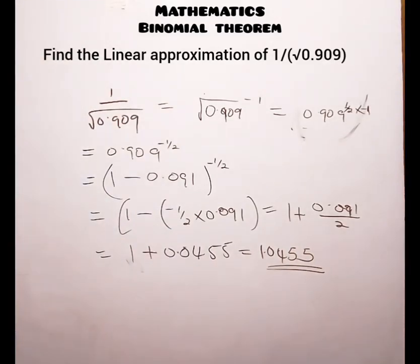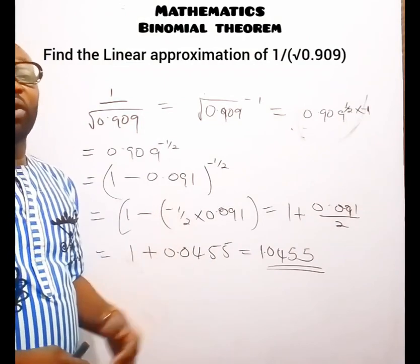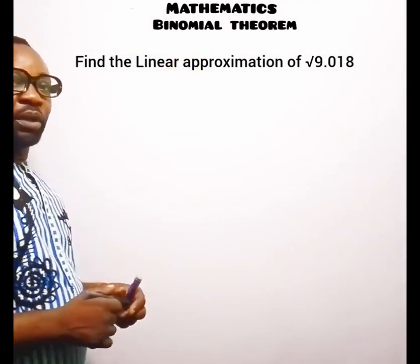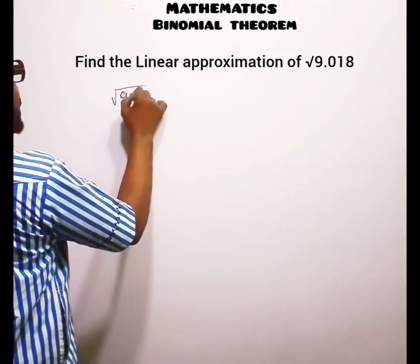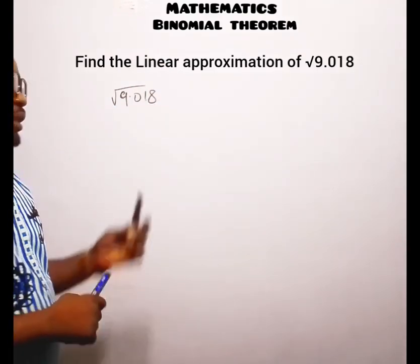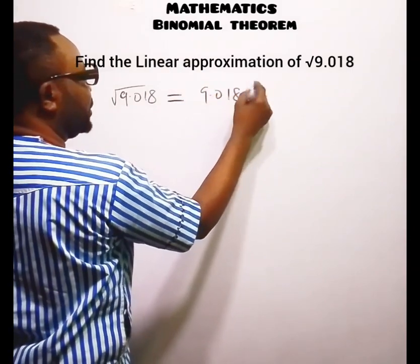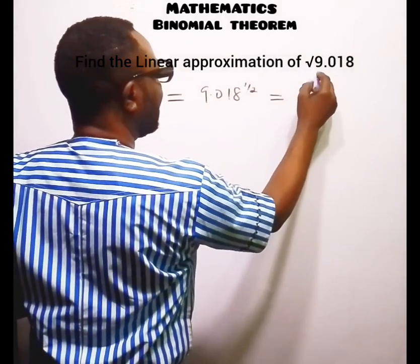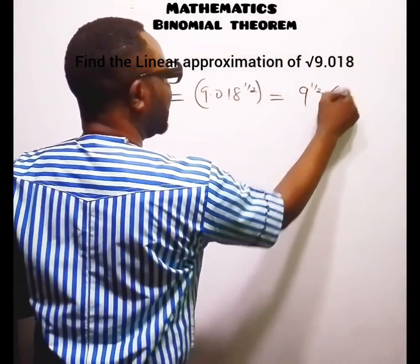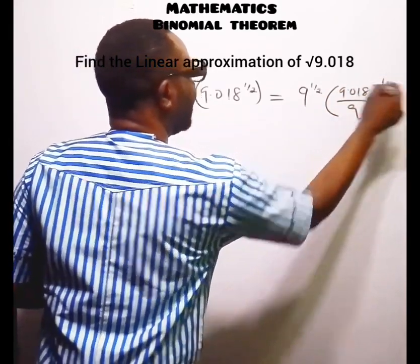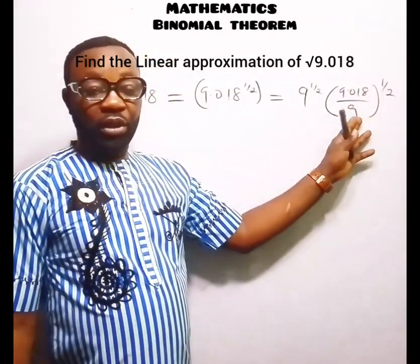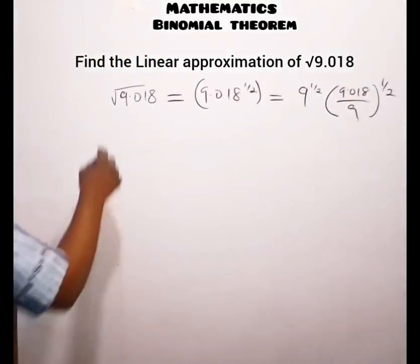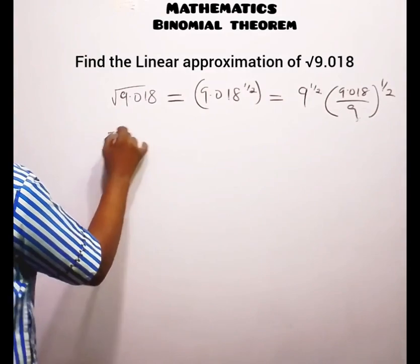The next question asks us to find the linear approximation of the square root of 9.018. This equals 9.018 raised to the power of one-half. We factor it as 9 raised to the power of one-half, multiplied by the bracket of 9.018 over 9, raised to the power of one-half. Dividing 9.018 by 9 gives 1.002 raised to the power of one-half.